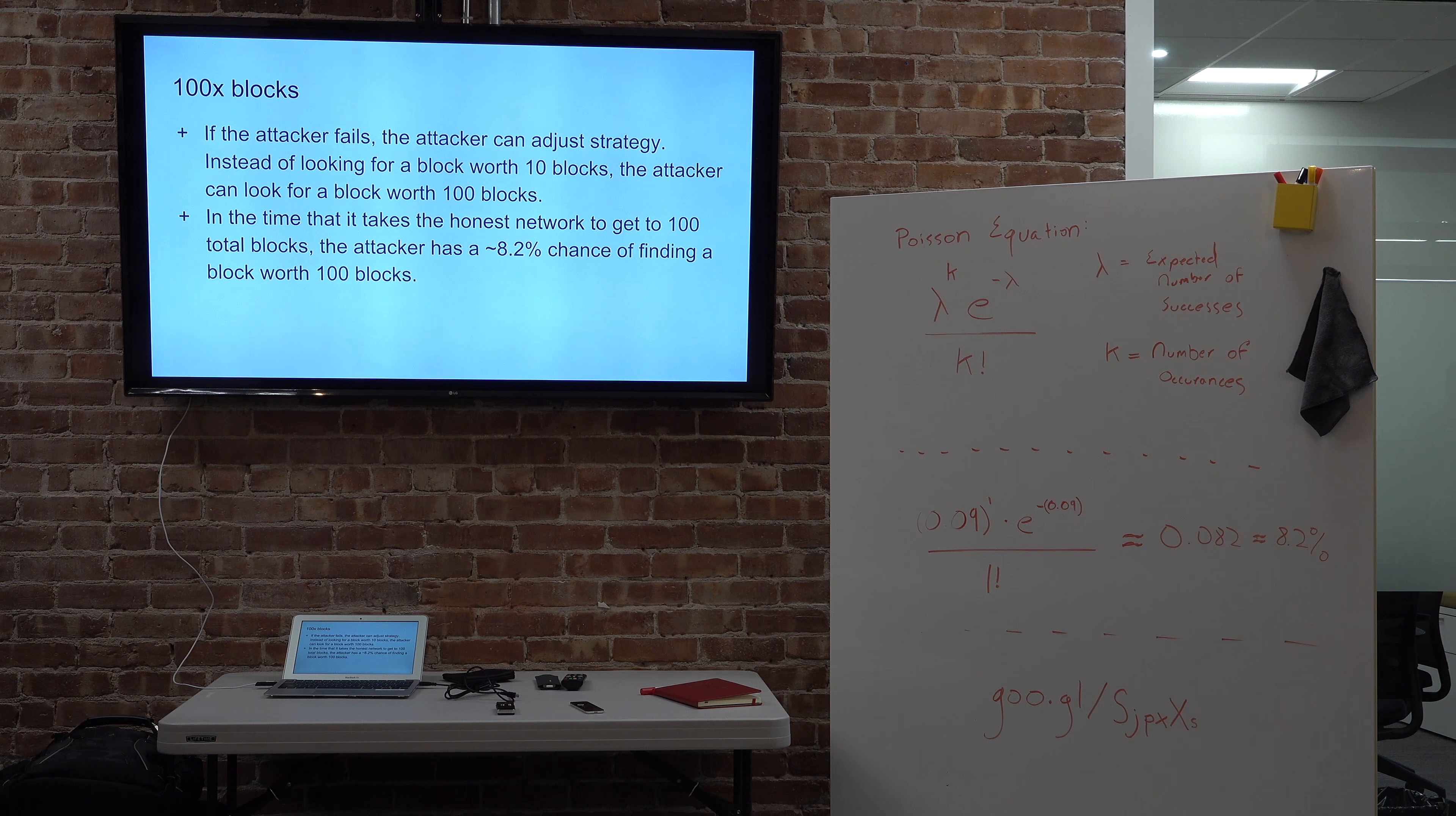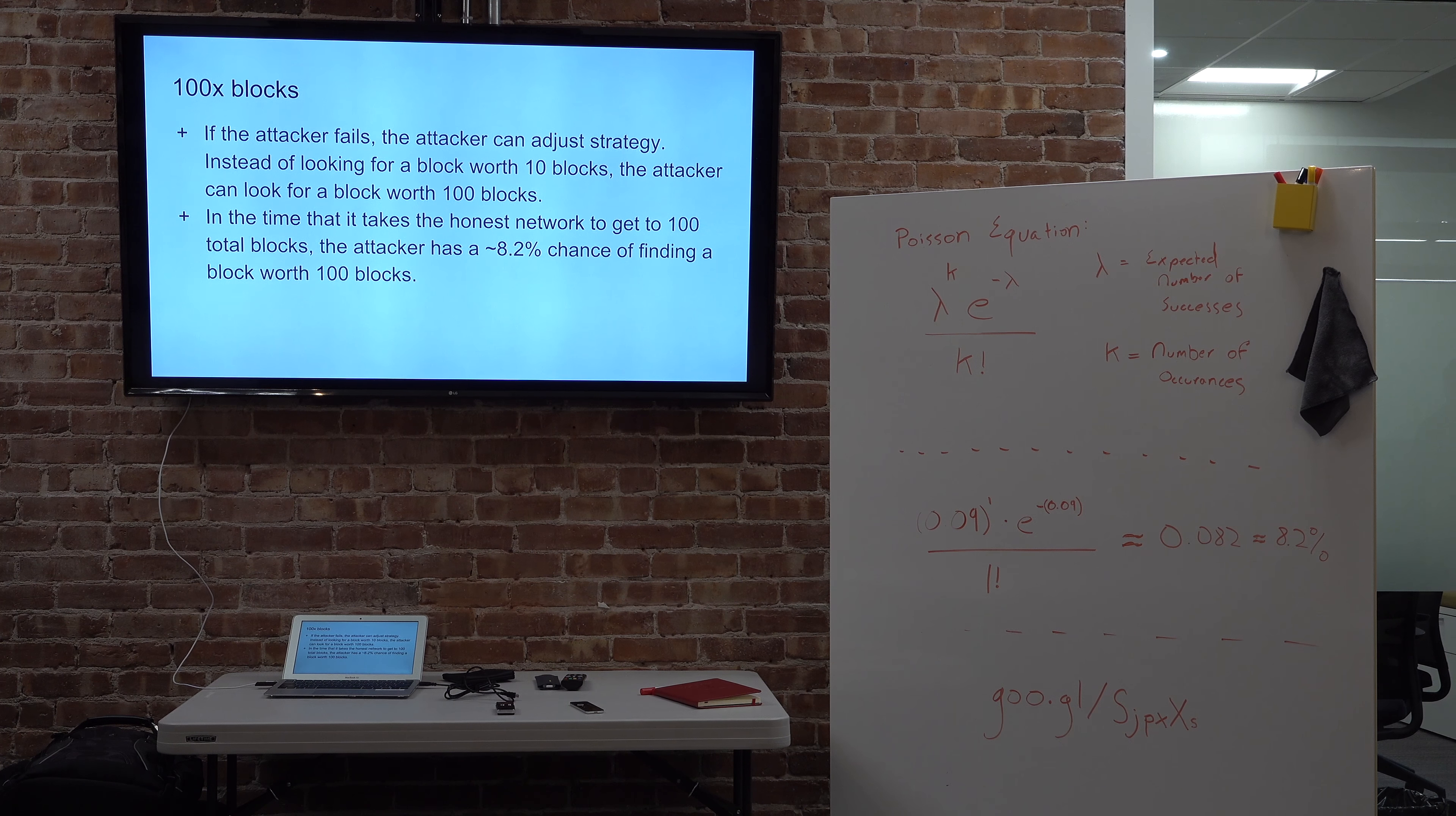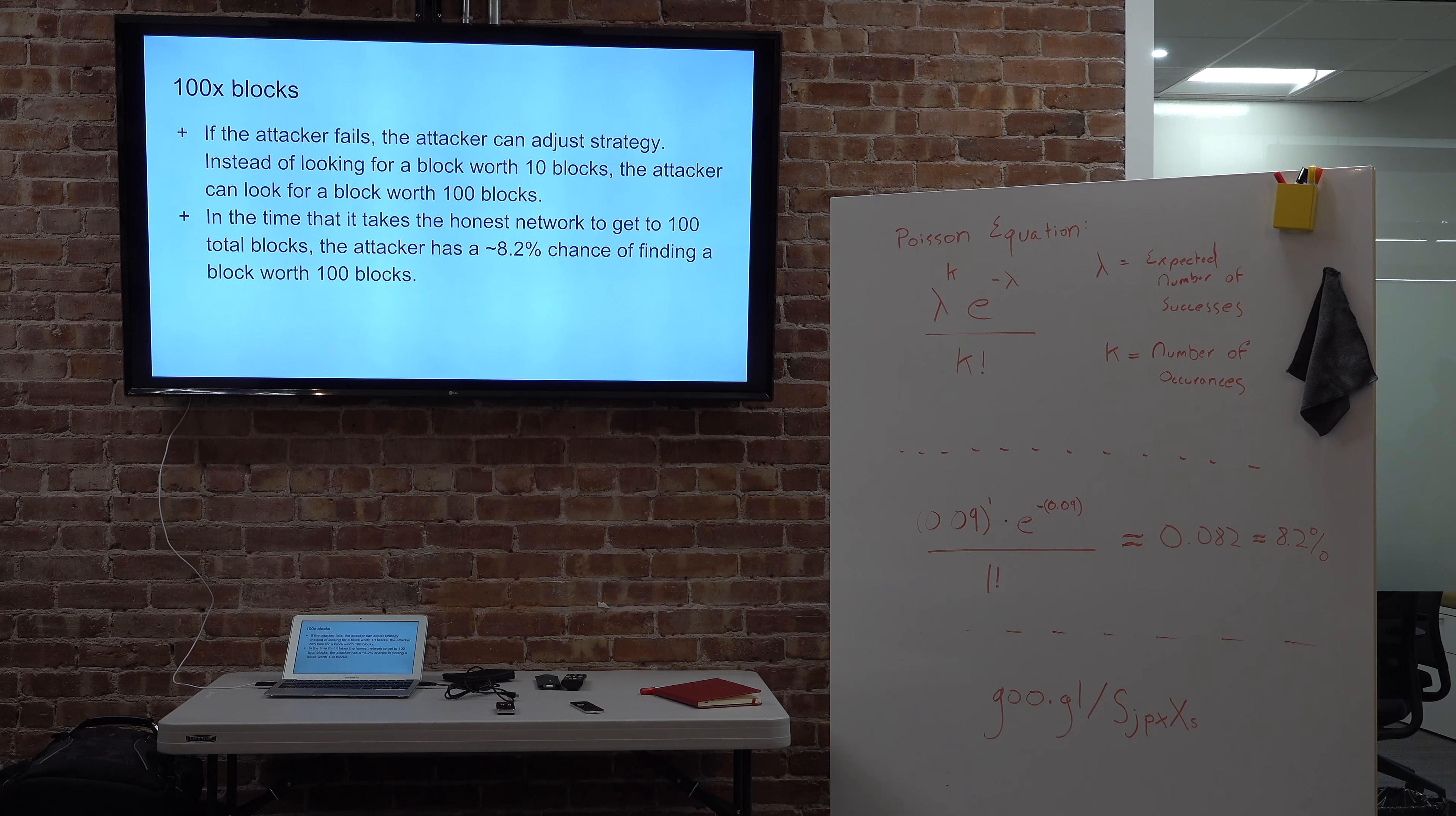So let's assume the attacker fails. 9% is not very high. So the attacker is going to do it again this time. Instead of looking for a block worth ten blocks, the attacker is going to look for a block worth 100 blocks. And so in the time that the honest network takes to make 100 blocks, which is going to be, they're already at ten, so they need 90 blocks, it's going to take them about 900 minutes. The attacker is going to have approximately 8.2% chance of finding a block worth 100 blocks in that 900 minutes. And so that's where this equation comes in. It's a Poisson process for finding blocks. I pulled the equation off of Wikipedia and with .10 and .09 expected blocks, we have an 8.2% chance that we find the block we're looking for.